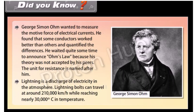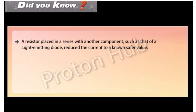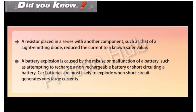Lightning is a discharge of electricity in the atmosphere. Lightning bolts can travel at around 2,10,000 km per hour while reaching nearly 30,000 degrees Celsius in temperature. A resistor placed in series with a component such as an LED reduces the current to a known safer value. A battery explosion is caused by misuse or malfunction, such as attempting to recharge a non-rechargeable battery or short-circuiting it. Car batteries are most likely to explode when a short-circuit generates very large currents.